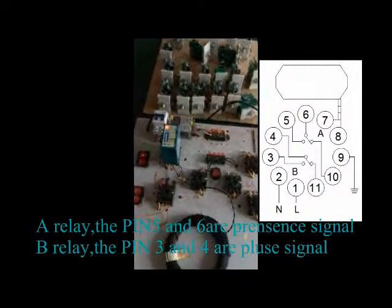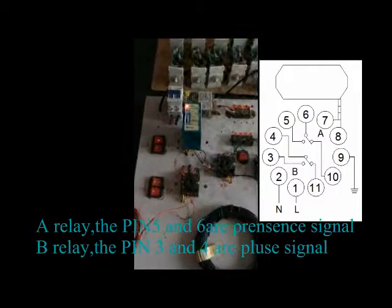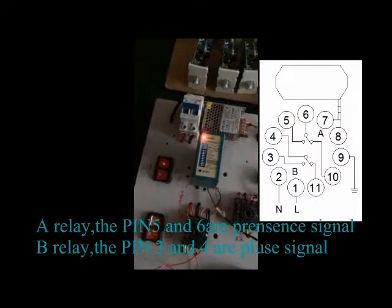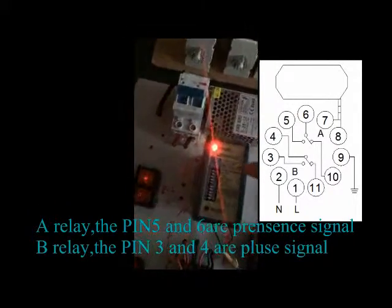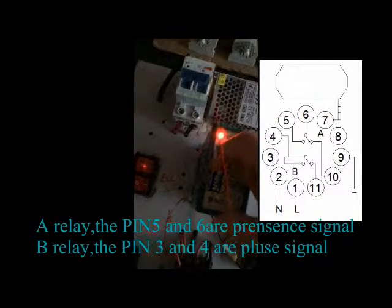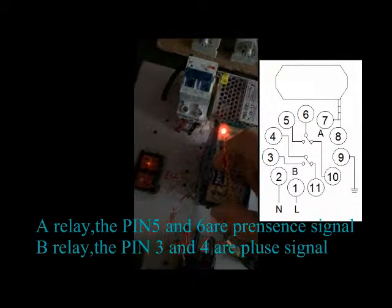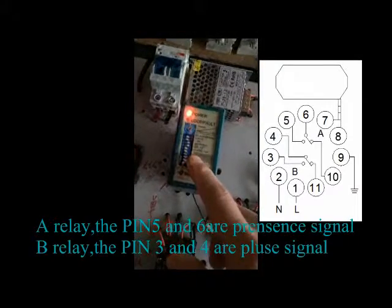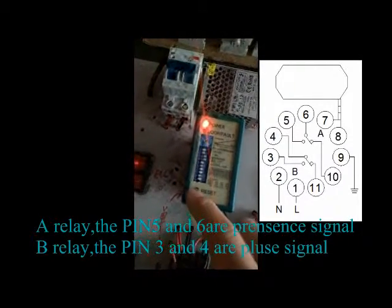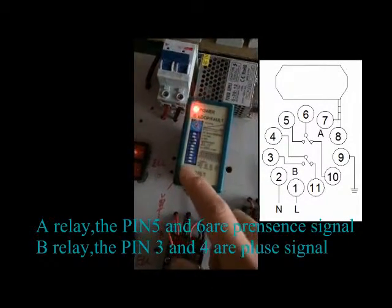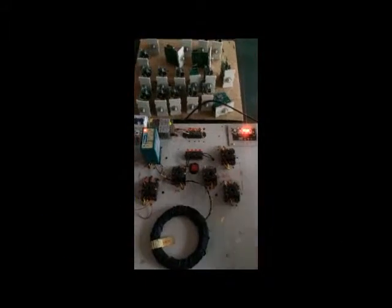So if you want to use our single channel loop detector for the traffic control, how to setting? Switch three and four, this one. After setting, press, let's set. Okay, we can see, try.